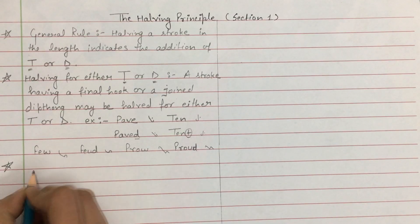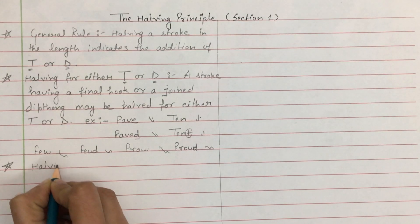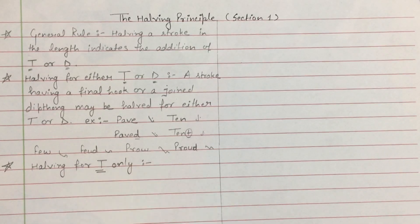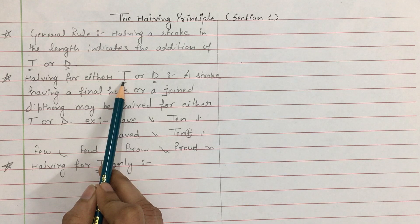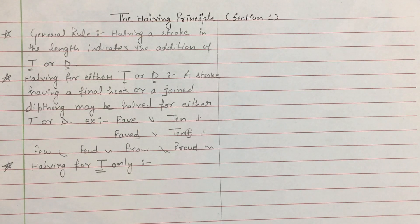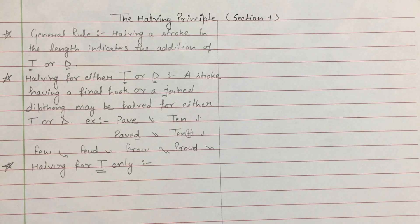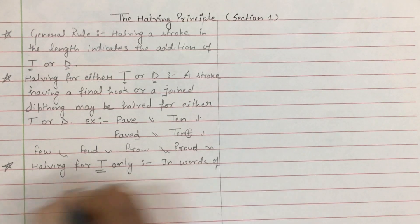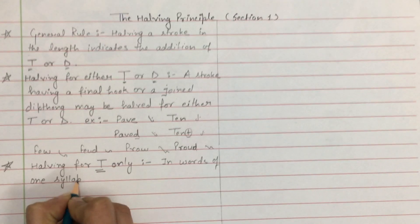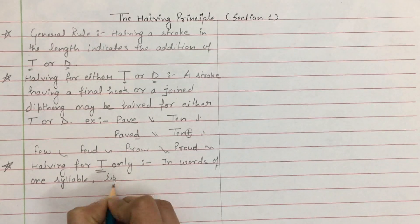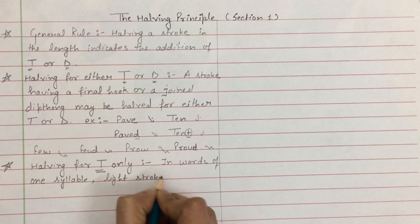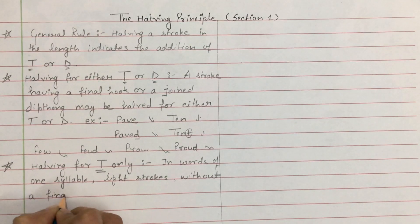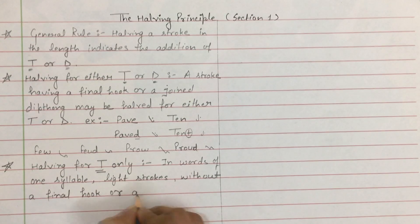Next point: halving for T only। इस point में हम पढ़ रहे हैं किस case में सिर्फ T के लिए half होगा। In words of one syllable — light strokes without a final hook or a diphthong।